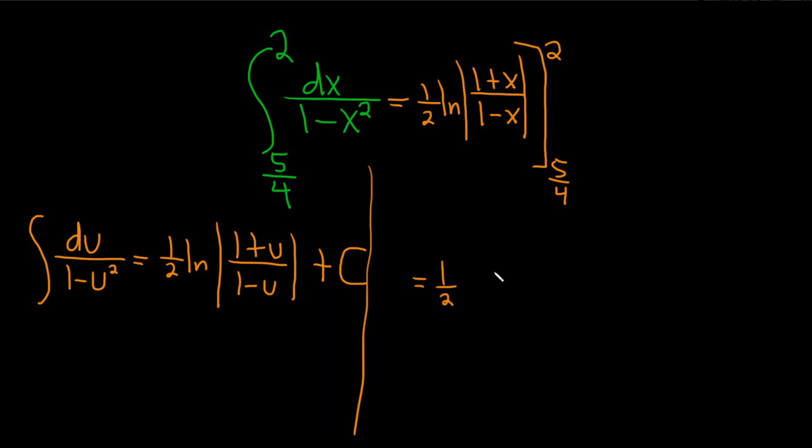I'm just going to put a line here so we don't get confused with what's going on. So I'll leave the 1 half on the outside. So we're plugging in 2 now. So it'll be ln, absolute value. So plugging in a 2 for the x, you get 1 plus 2, which is 3. And then 1 minus 2, which is negative 1. So 1 plus 2 is 3, 1 minus 2 is negative 1.